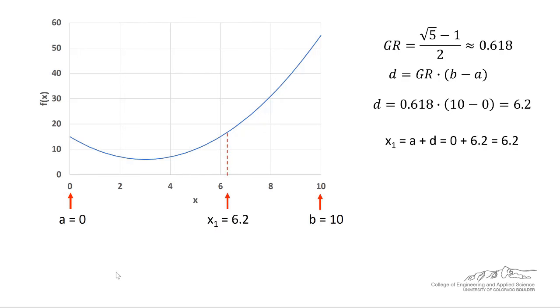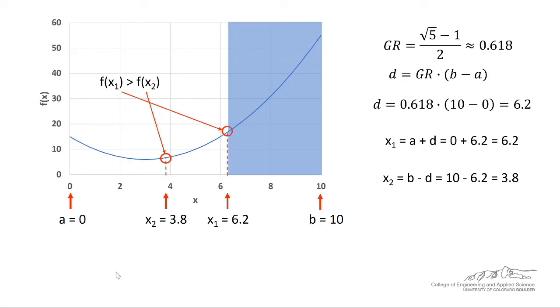We then calculate x1, so that's equal to 6.2. We then subtract d from b to calculate x2. That's about 3.8. Next, we compare f(x1) to f(x2). In this case, since f(x2) on the right is greater than f(x1), then what we do is we eliminate everything to the right of x1. And in this case, x1 then becomes the new b.